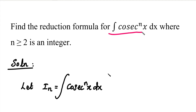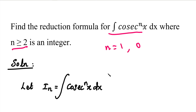Hi students. In this case, we can derive a reduction formula for the integral of cosecant power n x dx. When the power of cosecant x is a small number, the integration will be easier. But if the power is large, direct integration becomes difficult. So the reduction formula is very useful. If the value of n is 2 or greater, the formula is applicable. If n is 1 or 0, we can write the answer immediately because there are direct formulas.